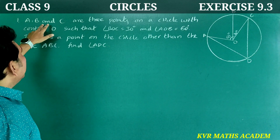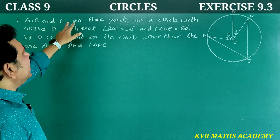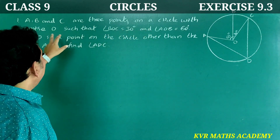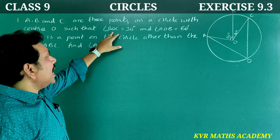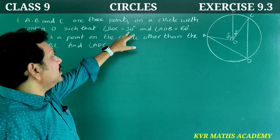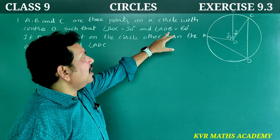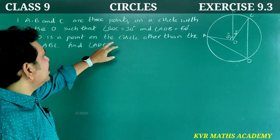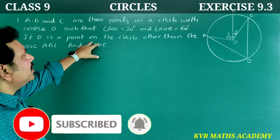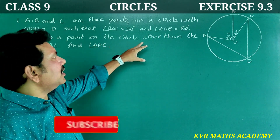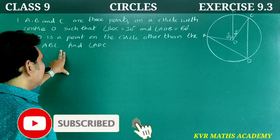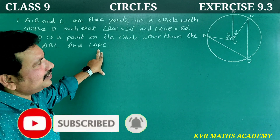First question: A, B, and C are three points on a circle with center O such that angle BOC is equal to 30 degrees and angle AOB is equal to 60 degrees. If D is a point on the circle other than the arc ABC, find angle ADC.